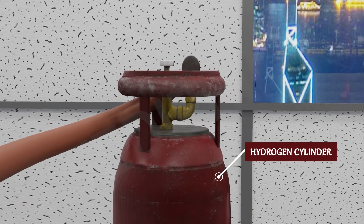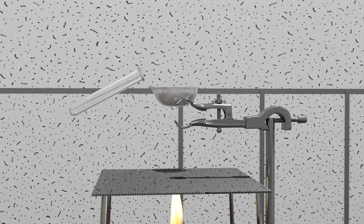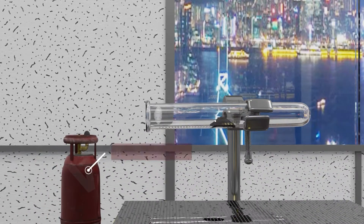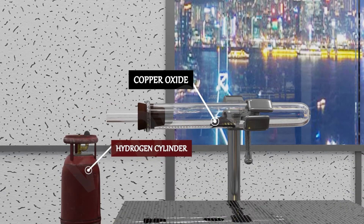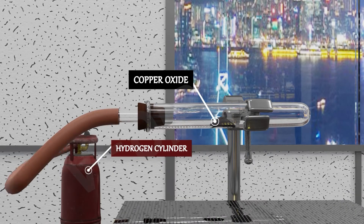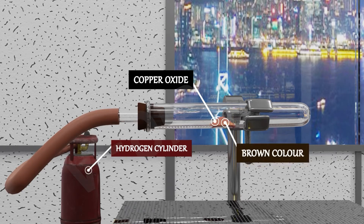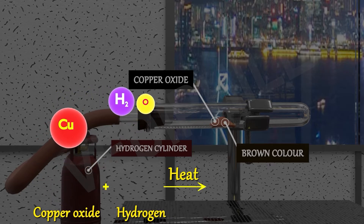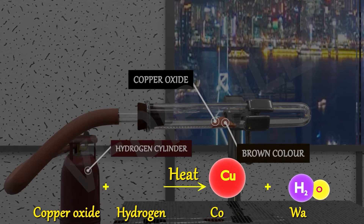Now we are going to pass hydrogen over the heated material, or copper oxide, and observe the change in color. The black color has changed back to brown, as copper is formed again. So the reaction is CuO plus H₂, in the presence of heat, gives Cu and H₂O.